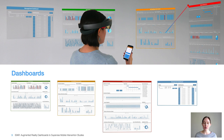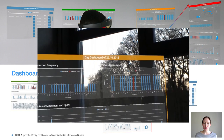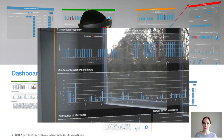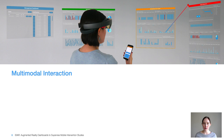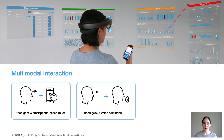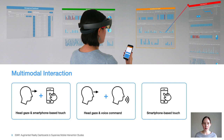In the following video, you will see the recorded augmented reality view of a user. The user looks at the day dashboard, which shows the day of the study with an overview of all participants' data for the chosen day. Users can choose from three interaction techniques: HeadGaze combined with smartphone-based touch, HeadGaze combined with voice commands, or smartphone-based touch alone.